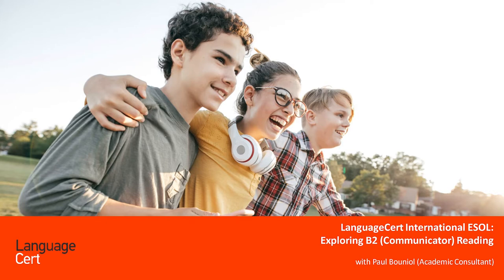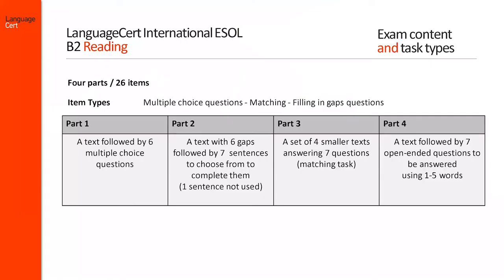After the listening component, candidates may choose to continue with the reading and then with the writing component, or the other way around. The reading component of the Language Cert International ESOL exam at B2 level consists of four parts and there are 26 items in all.